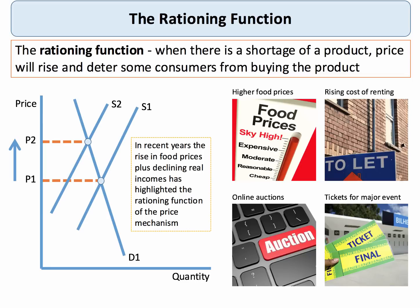The rationing function is where prices serve to ration resources when demand is greater than supply. For example, when there's a shortage of a product, the price is bid up, leaving only those with the willingness and the ability to pay to purchase the product. There are good examples of food prices affecting people's real purchasing power. The high cost of renting is a way of rationing excess demand for rented accommodation, particularly in our major cities. Auctions are a way of stripping out those who are willing to pay different prices, particularly online auctions.